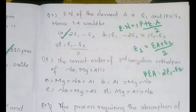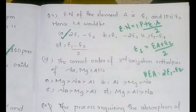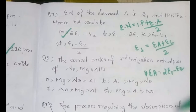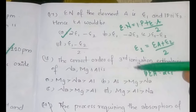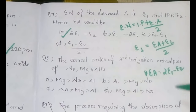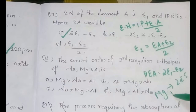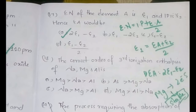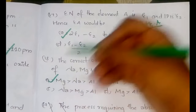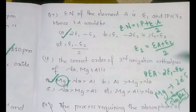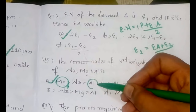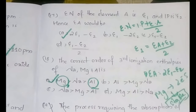The eighteenth question: the correct order of third ionization enthalpy of sodium, magnesium and aluminium is? Third ionization enthalpy means removing the third electron. For aluminium, removing the third electron gives it the stable noble gas configuration, so the third ionization energy of aluminium is the least. For magnesium, after removing two electrons it already attains noble gas configuration, so removing a third would disturb that stability — making magnesium's third ionization energy the maximum. The order is: Mg greater than Na greater than Al.